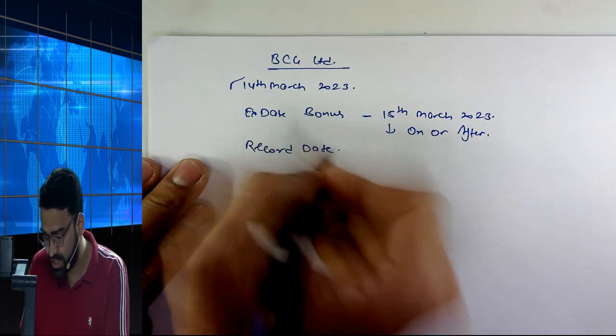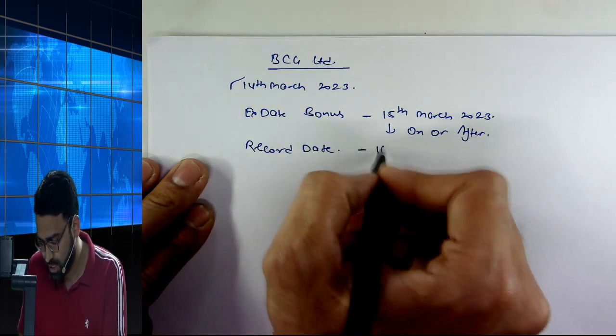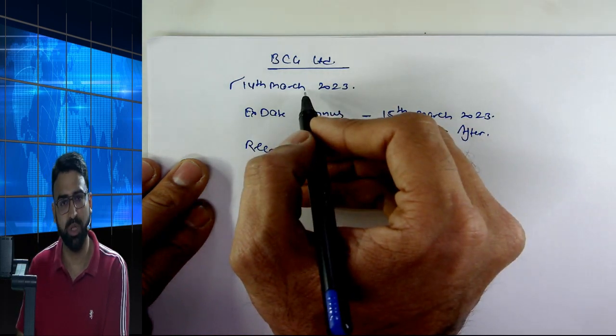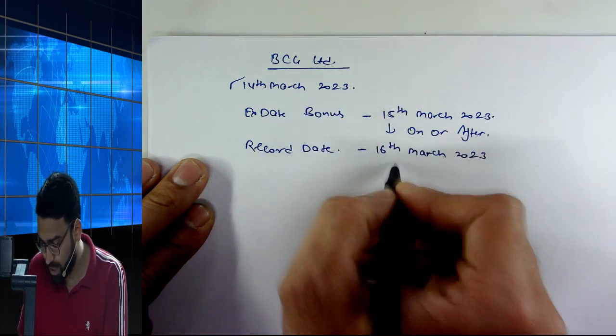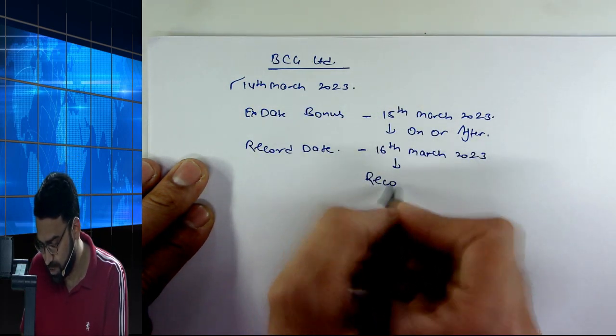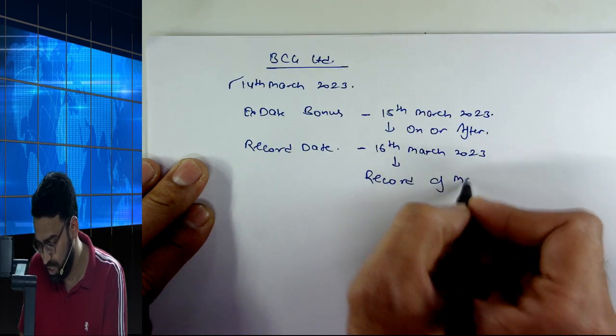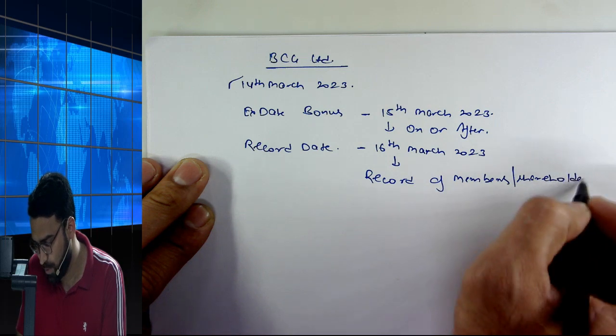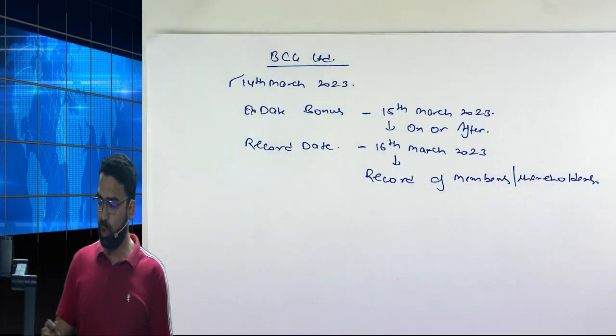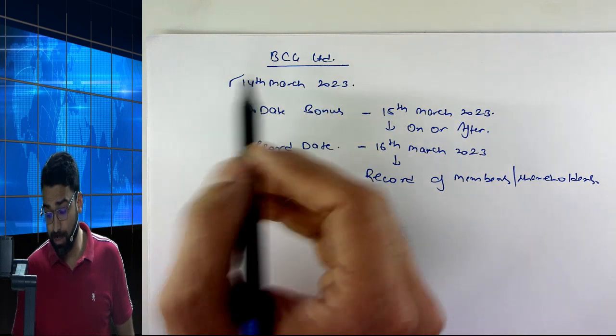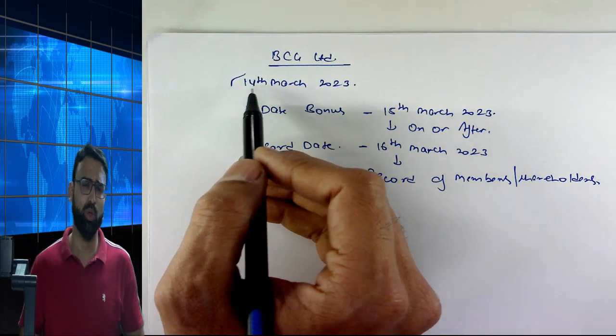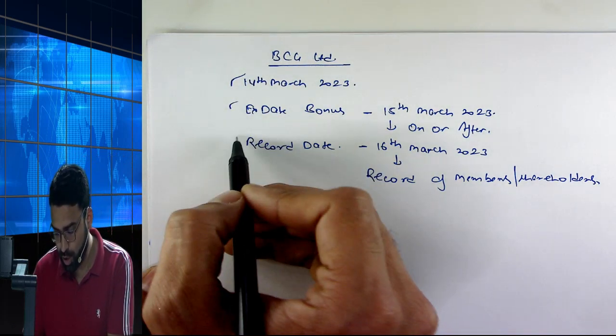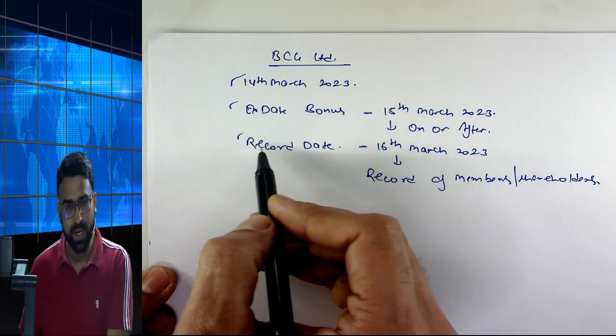Now, the record date. The record date is just one day after the ex-date. The record date is 16th March. So if you bought shares on 14th March, then on 16th March your name will be in the record of members, which is the record of shareholders maintained by the company. So if you bought shares before the ex-date on 14th March, then you will cross both the ex-date and record date.